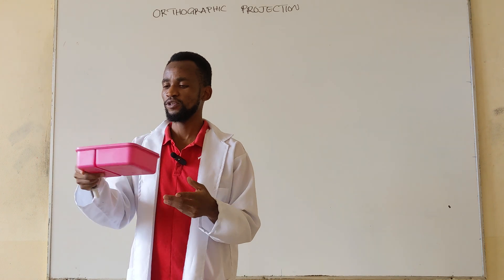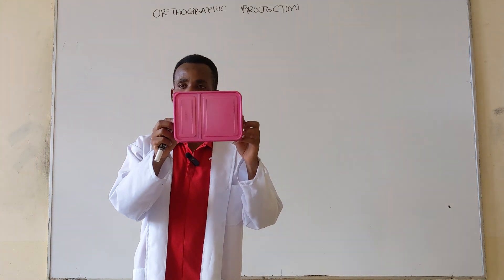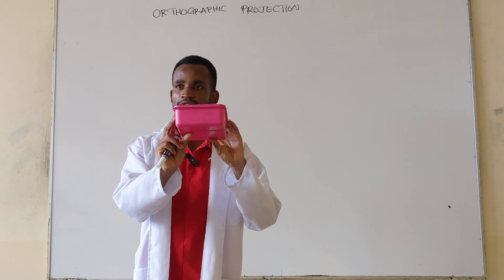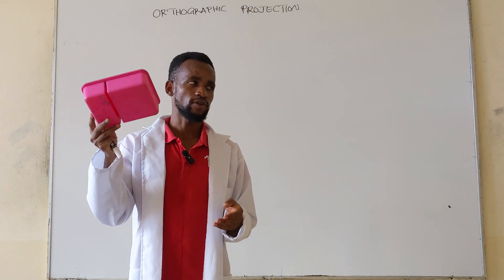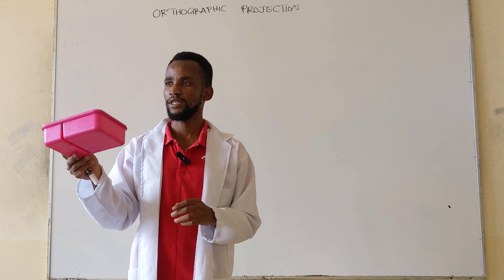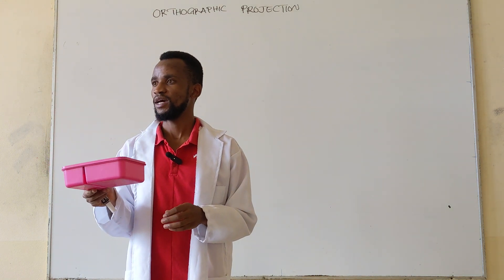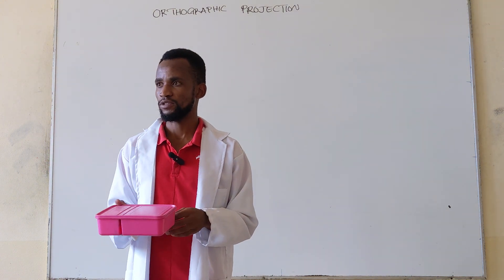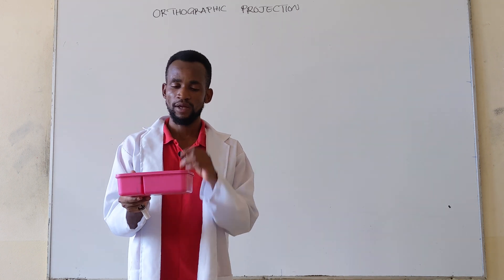For example, you can think of this one as the front, the top, and the side views. Using those three views, it is possible that you can come up with an object like this one, just by considering the dimensions and the views themselves. You can come up with an object like this one.